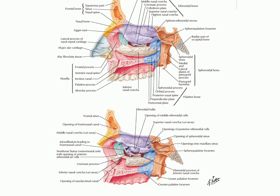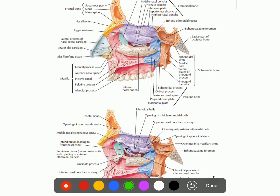This picture shows the uncinate process and the bulla ethmoidalis. The rounded elevation is the bulla ethmoidalis, on or above which the middle ethmoidal air sinus opens. The uncinate process is shown below, and between the two is the hiatus semilunaris. The anterior part of the hiatus semilunaris leads to the infundibulum, and the tip leads to the frontonasal duct.